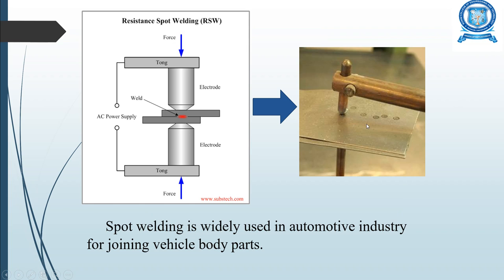Resistance spot welding is widely used in industry for joining vehicle body parts. An upper and lower electrode are connected to an AC power supply. Pressure is applied from the top electrode, power is switched on, and pressure is maintained until a strong weld is formed between the two metals being joined.